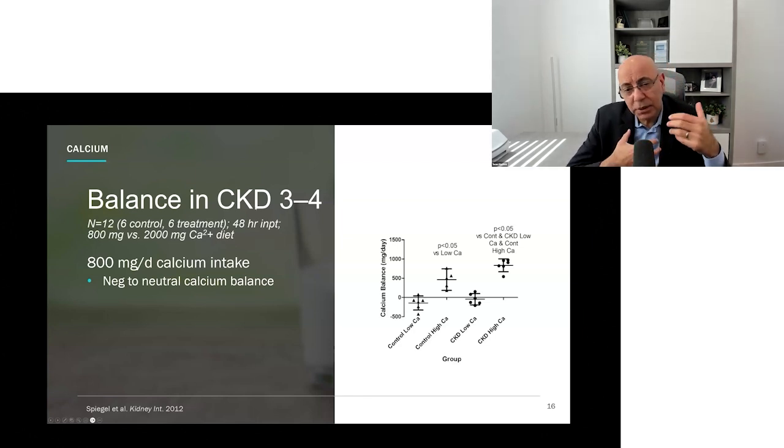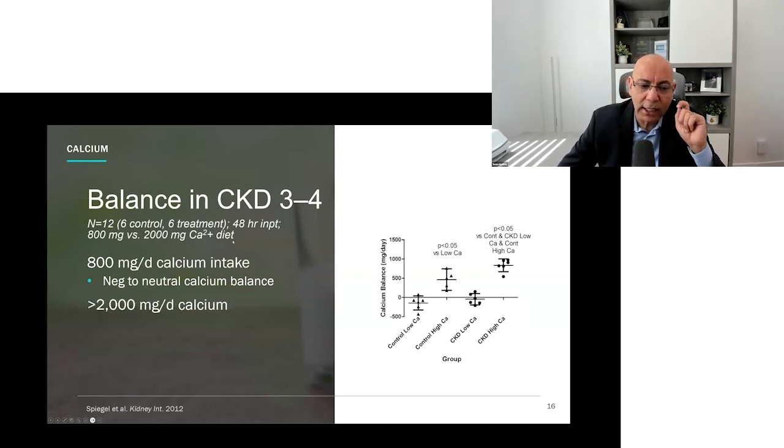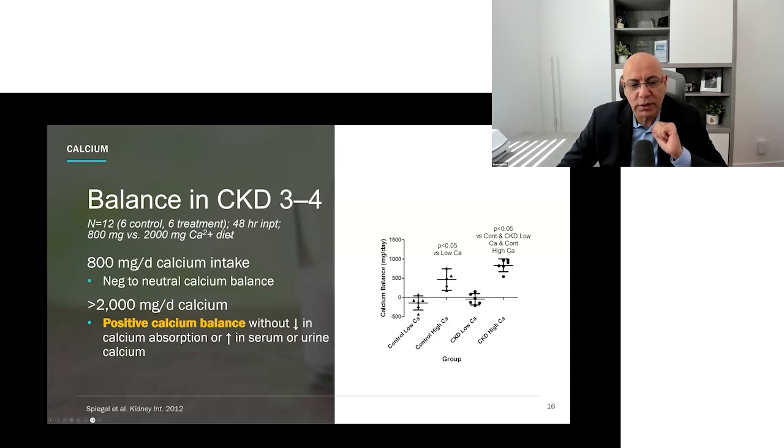There's another study that I love and use to educate people on a simple concept. When they look at people taking about 800 milligrams of calcium a day, they found that the people who took that much had a negative balance, meaning they might be leaching calcium from their bones, or they were neutral. So 800 maybe not the optimal level. Then they looked at what if we gave them two grams of calcium a day. They found there was a positive calcium balance.